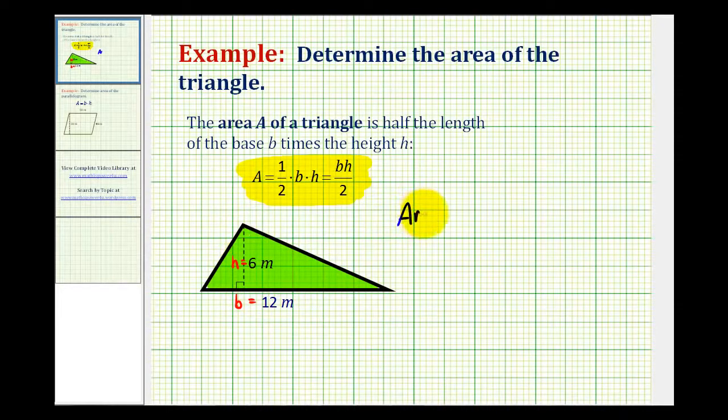So the area of the triangle is going to be equal to one-half times twelve meters times six meters. But we'll go ahead and put these in fraction form since we're multiplying by one-half. So we'll have twelve meters over one times six meters over one. And notice how if we leave the units in our product, this will remind us that the units will be square meters.